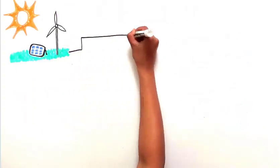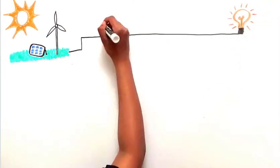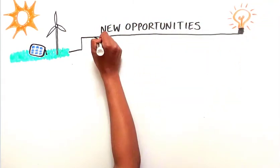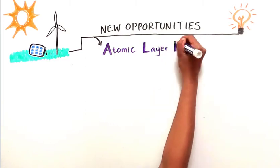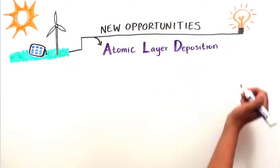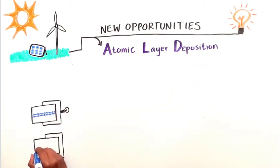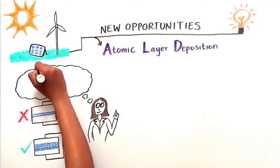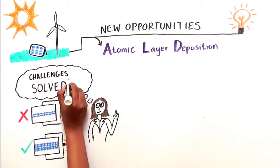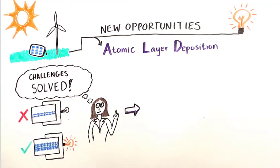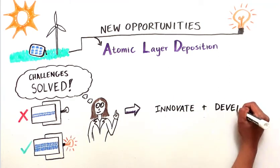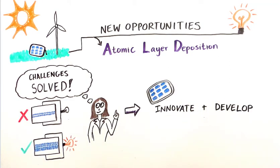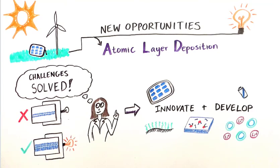As research continues in energy conversion technologies, new opportunities emerge for advances using atomic layer deposition. With new tools enabling the measurement and control of material structure and composition at the nanoscale, challenges in sustainable energy technologies can be solved. These problems inspire the Bent Group to innovate and develop nanoscale materials for the next generation of efficient energy conversion technologies.